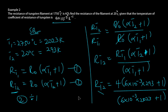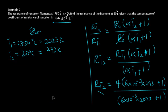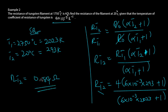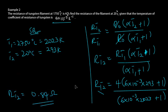Inputting all values into the calculator gives R_t2 equals 0.84 ohms. So the resistance of the filament at 20 degrees Celsius, or 293 Kelvin, is 0.84 ohms. If you don't follow this ratio method, you can approach it another way: from equation one, R_t1 equals R₀ times (1 + alpha·t₁).